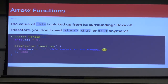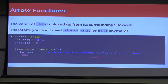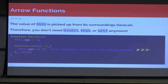Arrow functions also mean you don't have to use bind, 'that equals this', or 'self equals this'. They pick up the 'this' value from their surroundings. Take this example: we have a person object where this.age equals zero, and a setInterval increasing the age. In the regular function version, 'this' refers to the window — not what we want. We want it to refer to the person object. Back in the day we might do 'var that = this', and then do 'that.age++'. But if we use an arrow function, 'this' properly refers to the person object now, and we don't have to use any bind, that, or self.